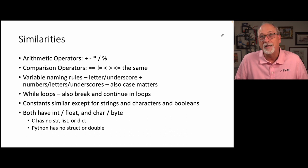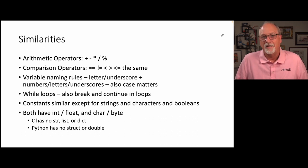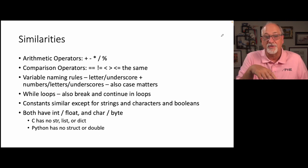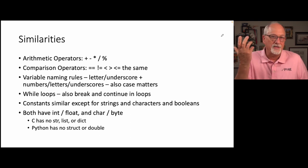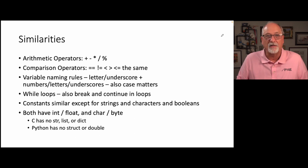About the only thing that's really different in constants is strings, characters, and booleans — and strings and characters are the biggest thing in the beginning. Both have int, float, char, and byte, but byte, string, and char are not the same thing. C has no str class, no list or dictionary, and Python has no concept of struct or double. Python's float is really C's double — by the time Python was written, the notion of shorter floating point numbers was less critical.